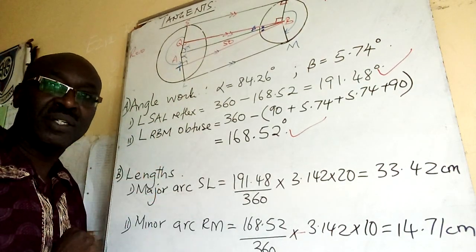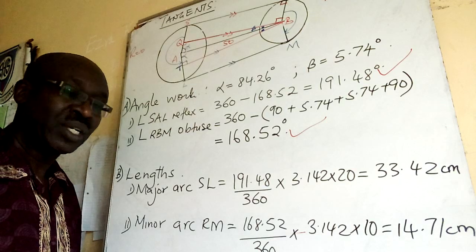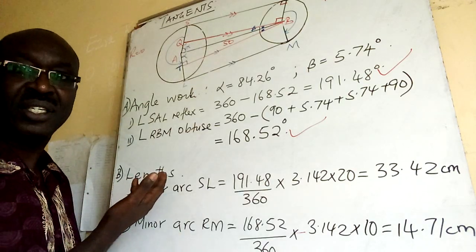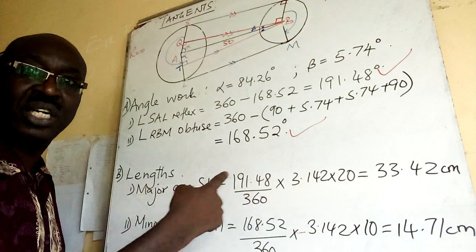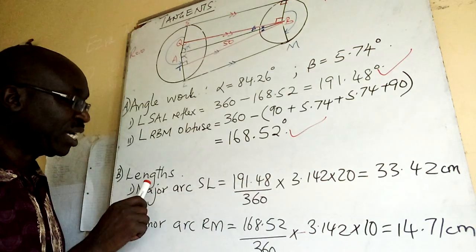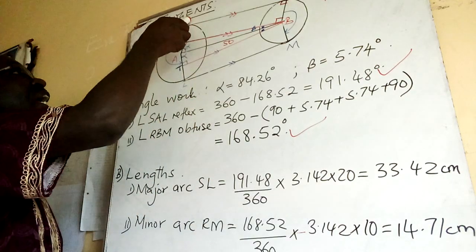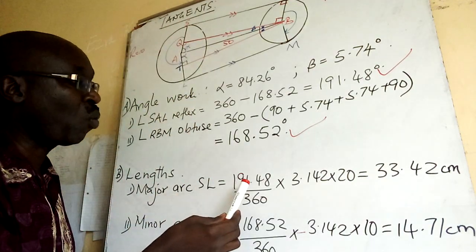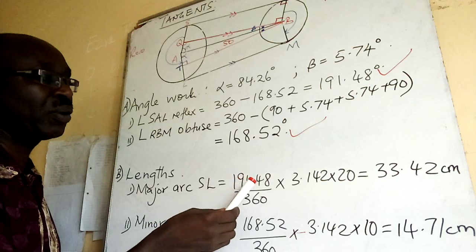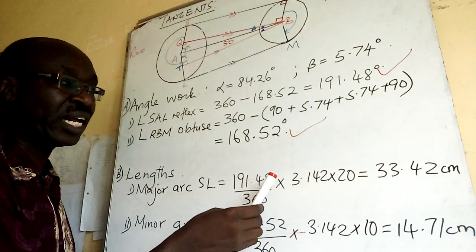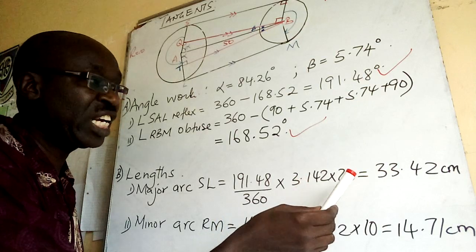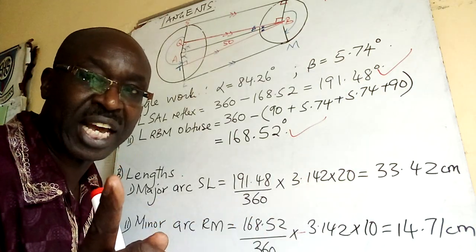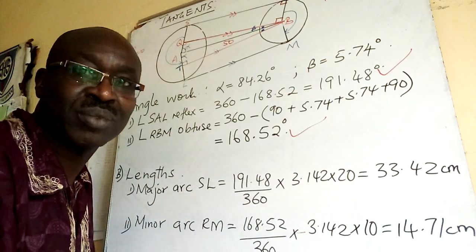Now I'm finished with angles and move to lengths. Major arc SL: it is (191.48 / 360) × πd. The radius is 10 so the diameter is 20. Substituting gives us the major arc length SL.